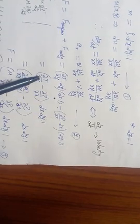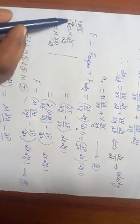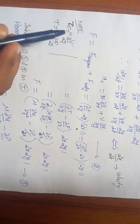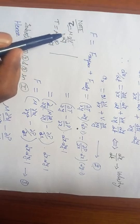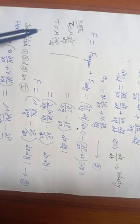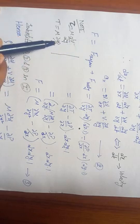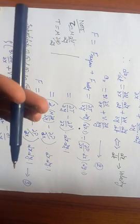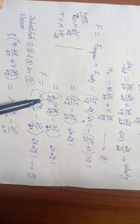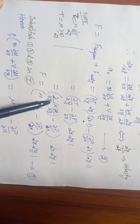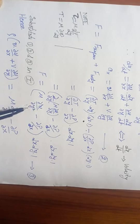The shear stress τ from Newton's law of viscosity is τ = μ·(∂u/∂y), where μ is dynamic viscosity. Substituting this into the force expression and treating μ as a constant, (∂τ/∂y) becomes μ·(∂²u/∂y²). So the net force term becomes μ·(∂²u/∂y²) – (∂p/∂x).